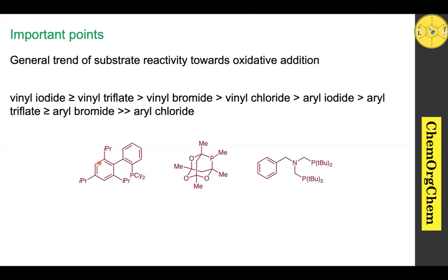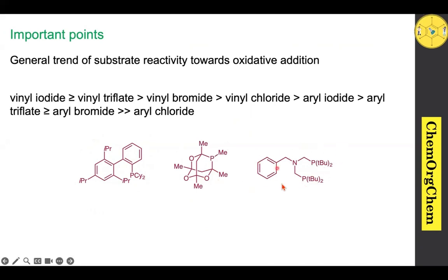A ligand with both electron-rich phosphine and sterically hindered groups is very useful for boosting oxidative addition. Similarly, certain electron-rich phosphine ligands are particularly useful for copper-free Sonogashira cross-coupling reactions.